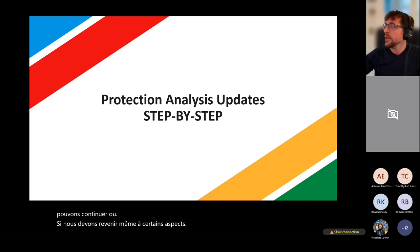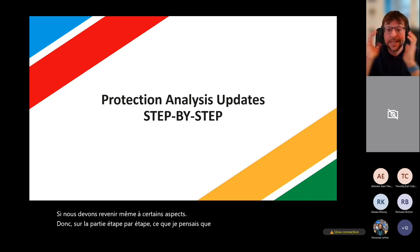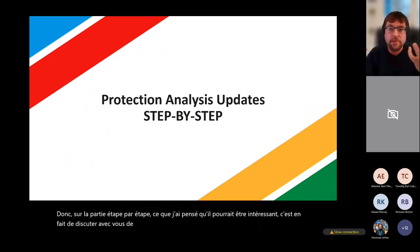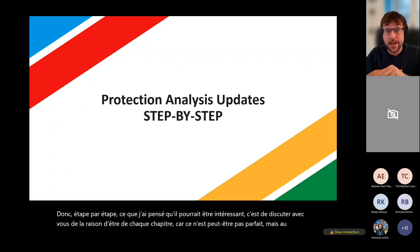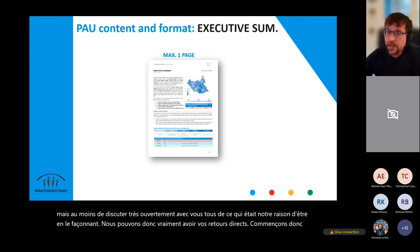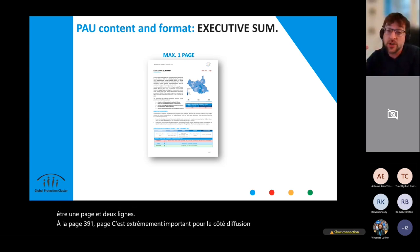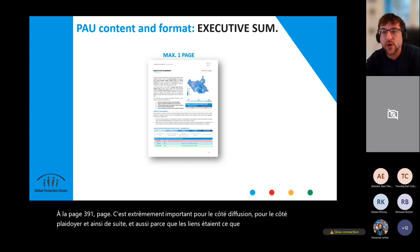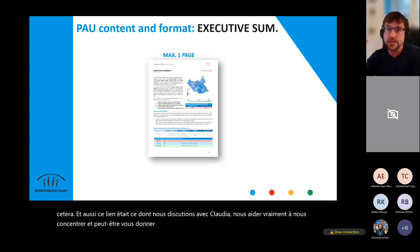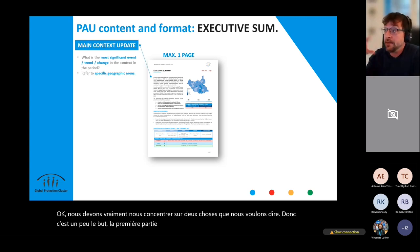On the step-by-step part: what I thought might be interesting is to discuss the rationale behind each chapter, because it might not be perfect, but I'd like to have your direct feedback. Starting with the executive summary: it is one page and this will be very strict — it cannot be one page and two lines, or three lines — one page. This is extremely important for the dissemination and advocacy side, and it also helps link back to what we were discussing with Claudia: really helps us focus and give all of you some elements to say to your constituency — okay, we really have to focus on two things we want to say.